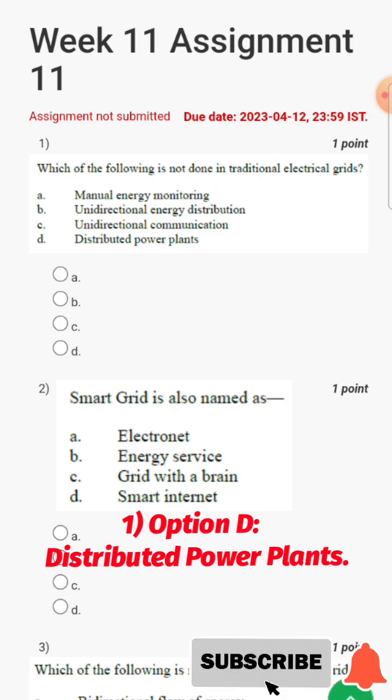The options are A, B, C, D. So its answer is option D, that is distributed power plants. So its answer will be D.